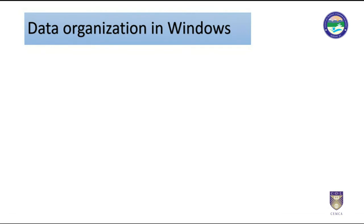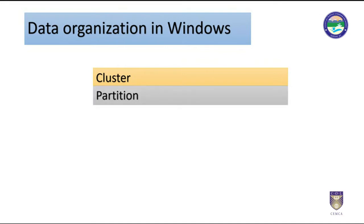Data organization in Windows. Windows organizes data using the following structures: Clusters — a group of sectors forming a cluster, typically 32KB, using logical representation of sectors. Partitions — logical divisions of physical storage. Large physical storage needs to be partitioned into smaller sizes so the operating system can use each partition as a separate entity. However, smart users hide data into hidden or temporarily deleted partitions.